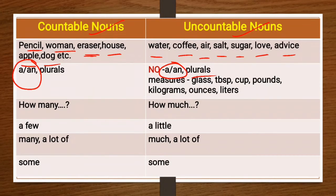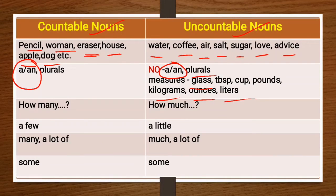For example, we can say 'two glasses of milk,' 'one tablespoon of sugar,' 'a cup of coffee.' We can use units of volume and weight like kilograms, ounces, and liters to talk about uncountable nouns.